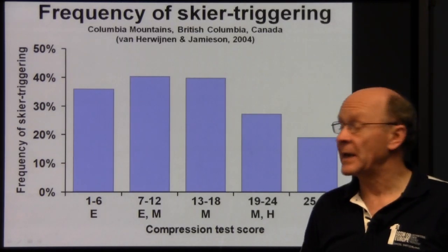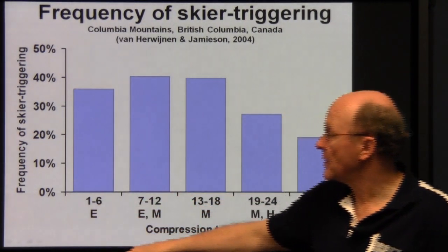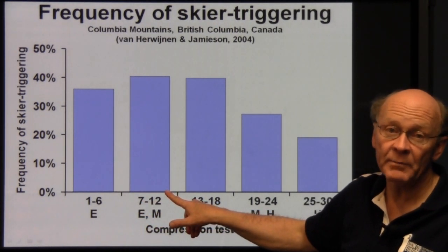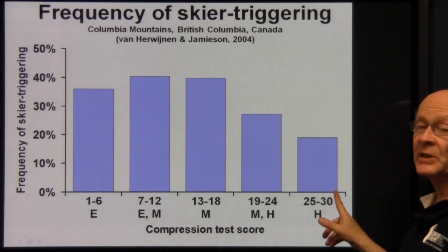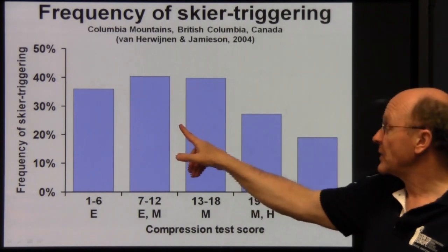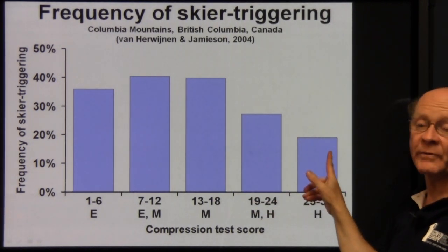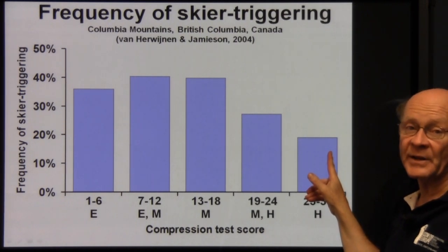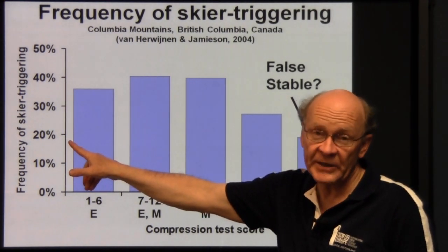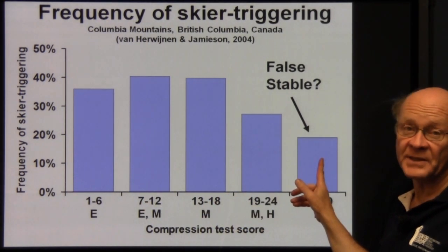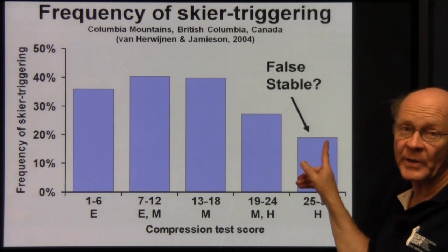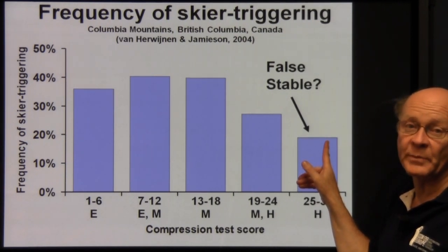Here are the real results obtained for the compression test. The frequency of skier triggering is highest for the first six easy taps, then declines through moderate taps, all the way through to the last six hard taps — but it doesn't drop off nearly as much as we would like. For the last six taps, we see about 18% of adjacent slopes being skier triggered. These could be considered false stables, because we've applied a lot of force and are seeing an indication of stability, yet 18% of adjacent slopes are still being skier triggered.